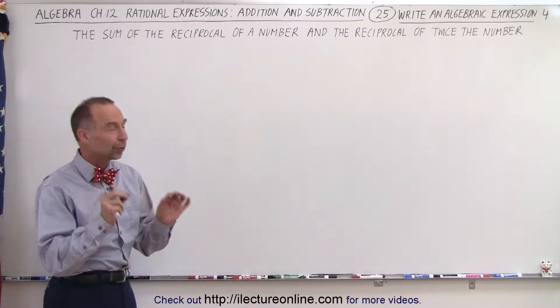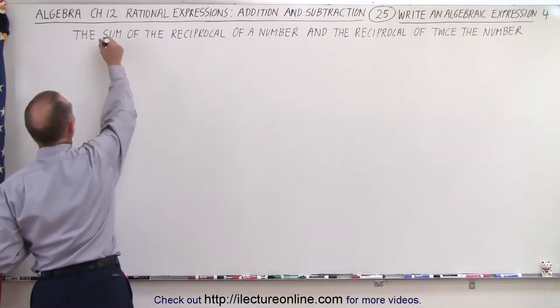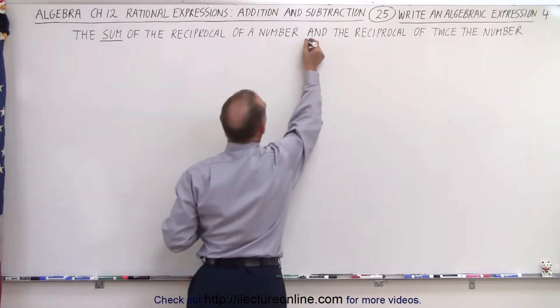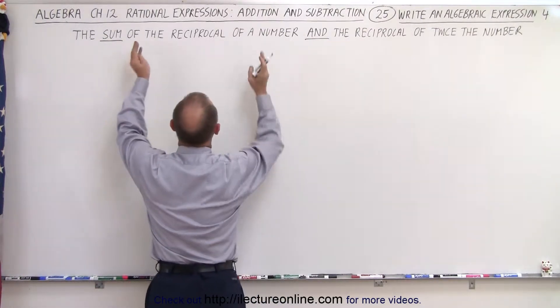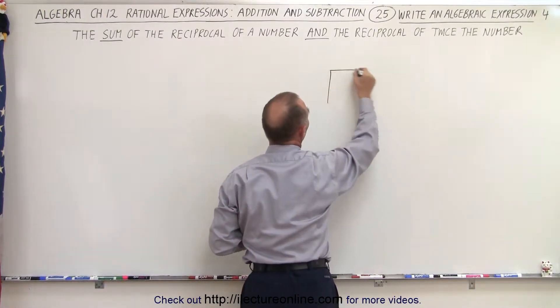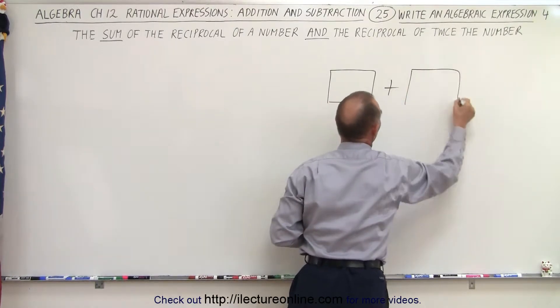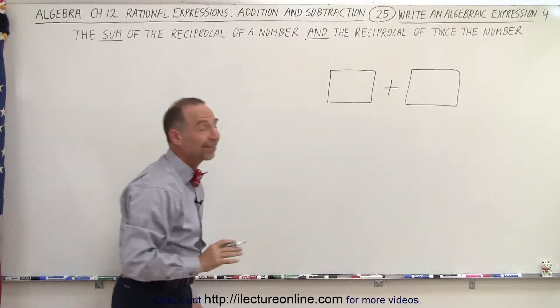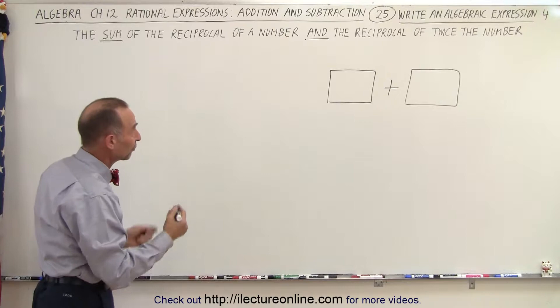It helps to look for the key words. First of all, they have the word sum and the word and. So the sum of something and something else. That means we can draw a box plus another box. So that's the general gist of that sentence. We're going to find the sum of two things.